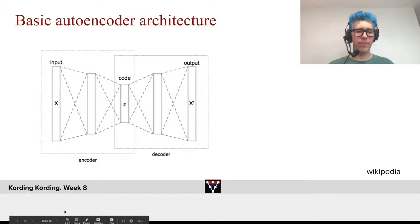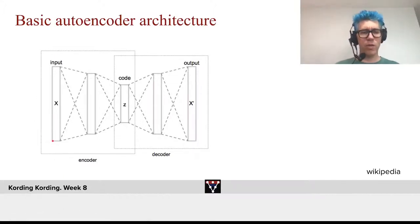We have an input here, X. Then that input gets encoded in an encoder. It potentially goes to multiple layers.